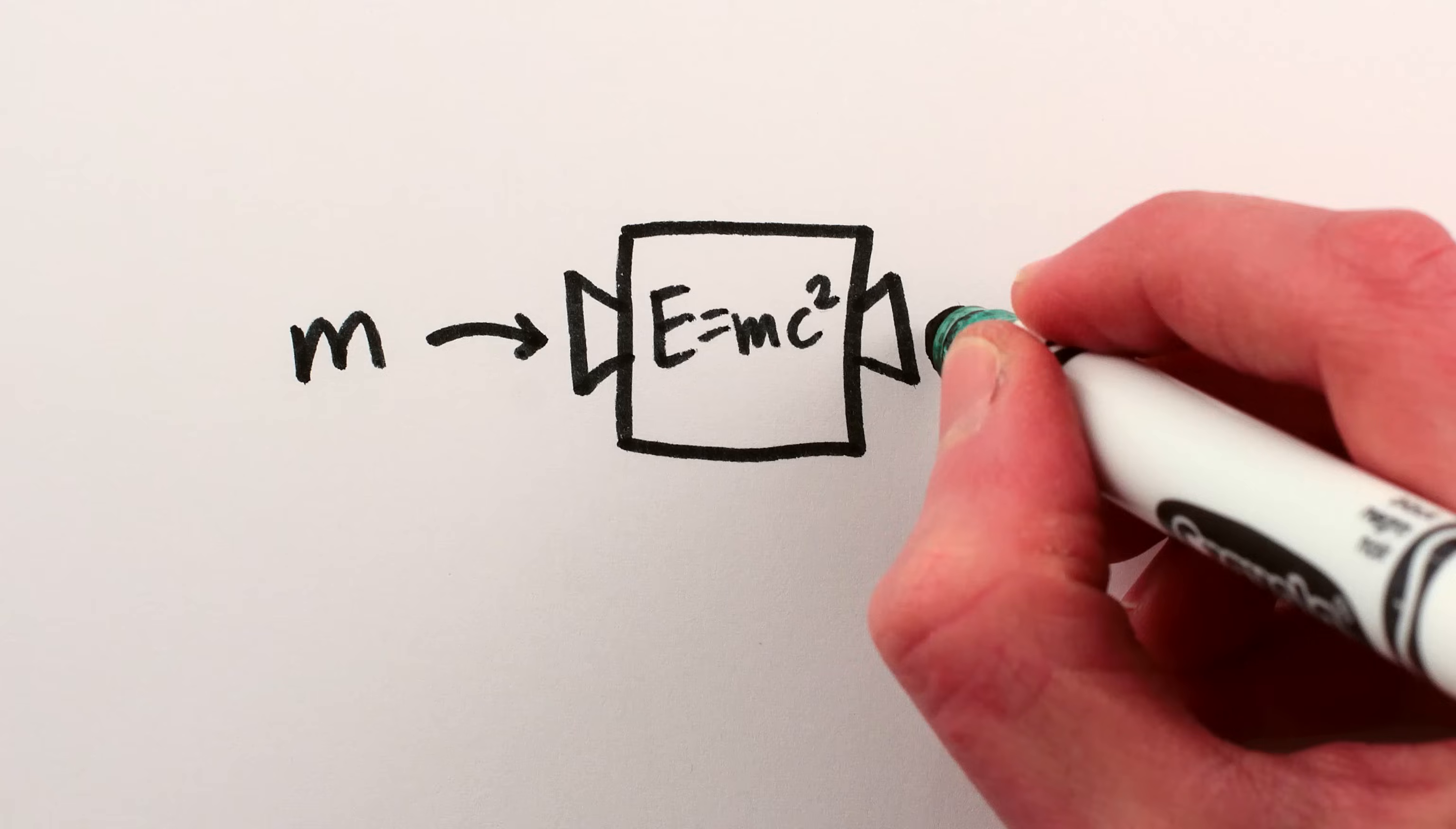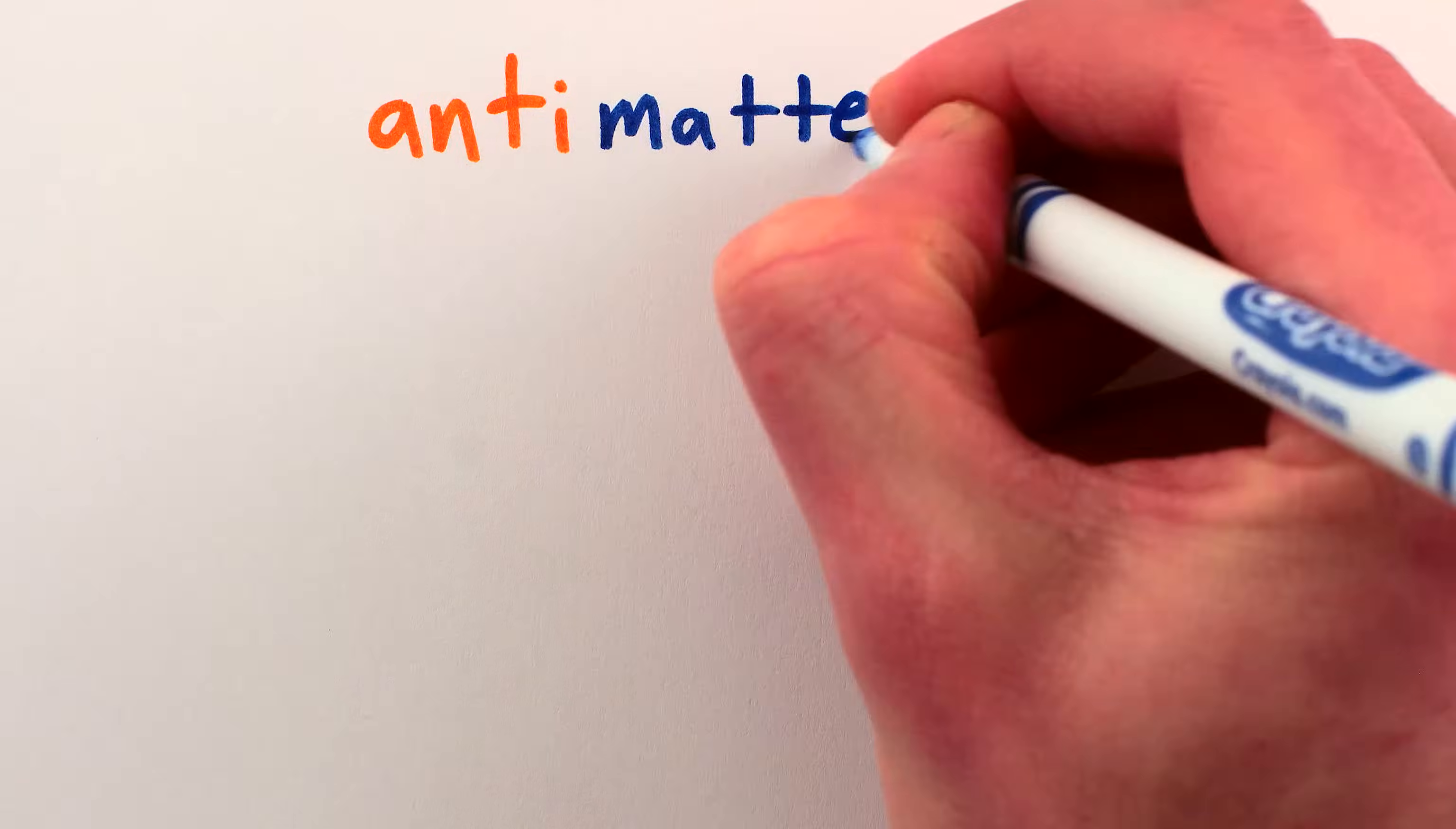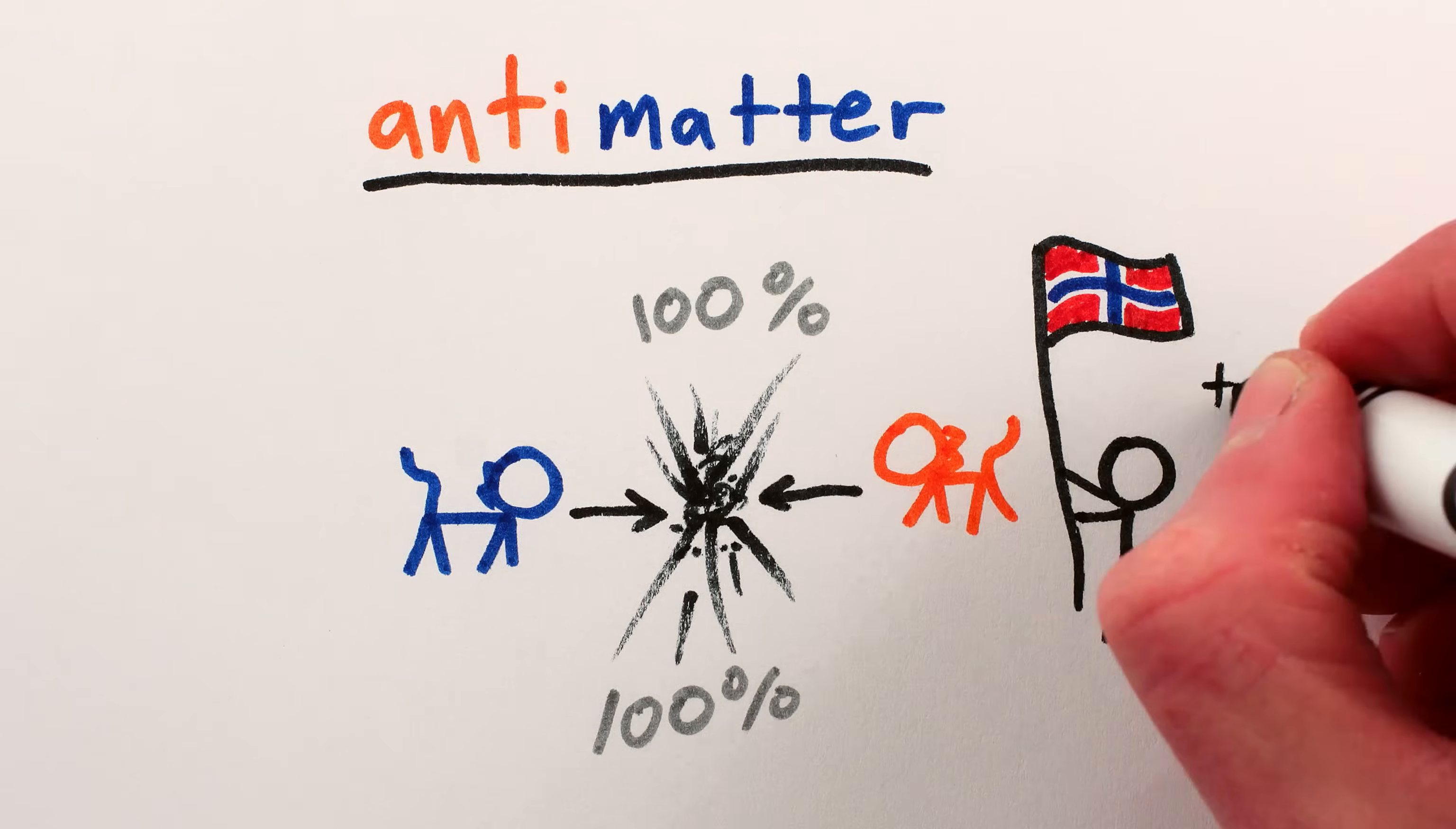But it turns out that efficiently extracting energy from mass is a very hard thing to do. Anti-matter is the most efficient way of extracting energy from mass, since if you collide a cat with a cat made of anti-matter, 100% of the mass of the cat and anti-cat will be converted into energy, powering Norway for two years.